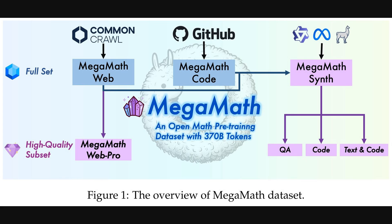Figure one gives a nice visual overview of how the MegaMath dataset is put together — where the different parts come from. At the top, the main sources: Common Crawl feeds into MegaMath Web, GitHub provides the data for MegaMath Code, and then large language models are used to generate MegaMath Synth. It also shows that MegaMath Web has a high-quality subset called MegaMath Web Pro, and the synthetic part is broken down into QA, code, and interleaved text and code. It really maps out the different streams feeding into the final 370 billion token dataset.